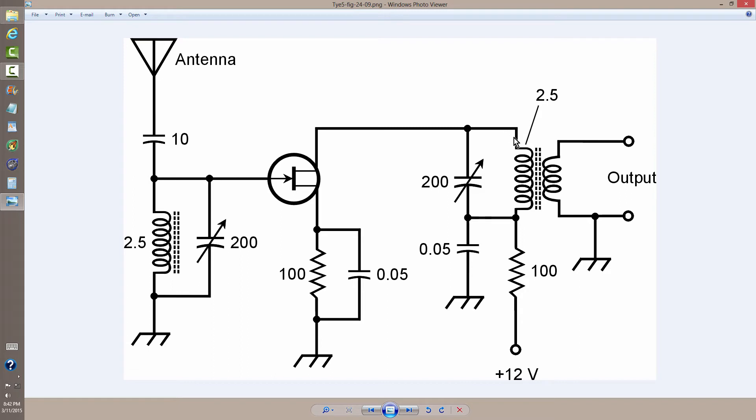Let's look at this parallel resonant circuit right here, comprising this coil, 2.5 microhenries and 200 picofarad capacitor. It's a variable capacitor. So you have a signal coming in at some frequency which you have tailored this circuit to resonate at somewhere in the middle of the range of this variable capacitor.